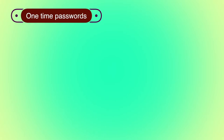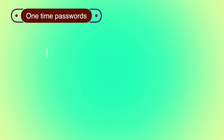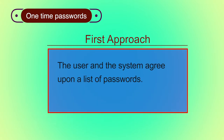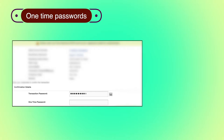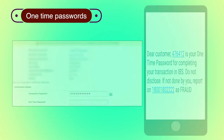A one-time password is disposable and applicable for only one login session or transaction. It involves three approaches. In the first approach, the user and the system agree upon a list of passwords — the disposable password you hold must match the password the computer has in its memory. For example, in internet banking, when you enter a transaction password, you simultaneously receive an OTP via SMS on your phone; you must enter both to complete a transaction. If both match, the transaction is successful.